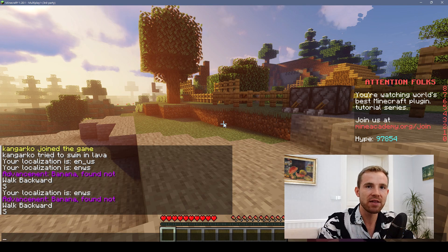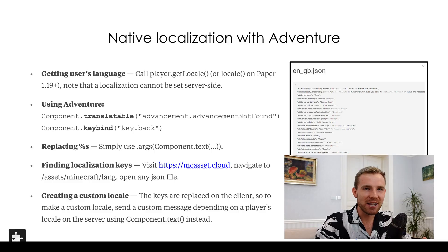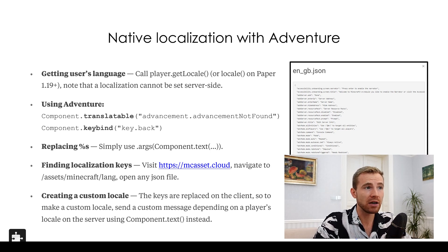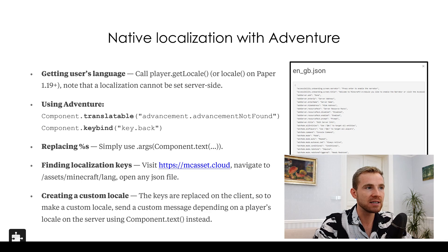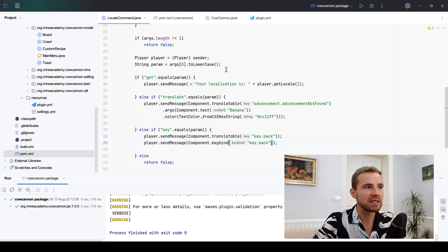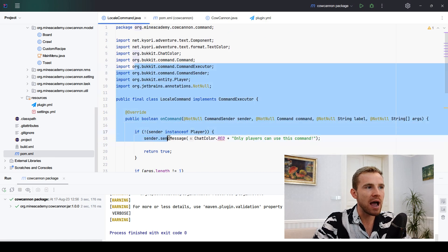Okay, powerpoint time — don't worry, it's just one slide. On this slide I put all the information for this video. Number one: how to get the user's language. There is a method called player dot getLocale(), or if you are on a new version of Paper you can just call locale(). This will return the localization. Please note that this cannot be changed on the server.